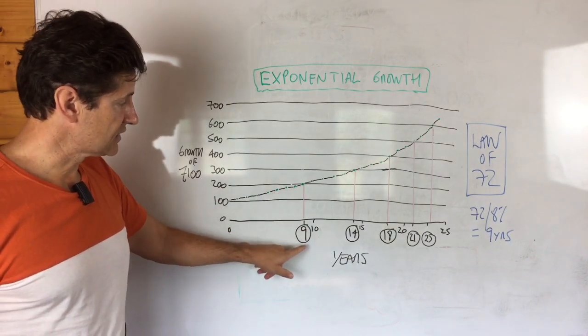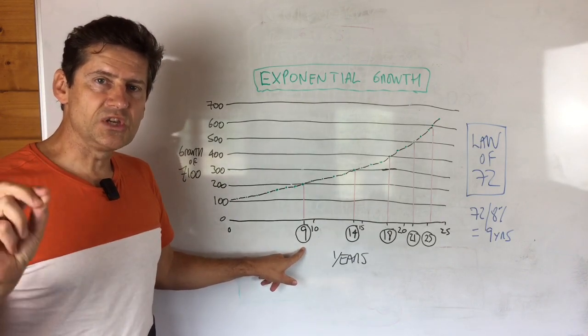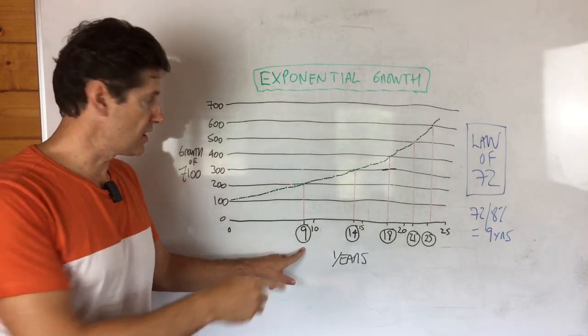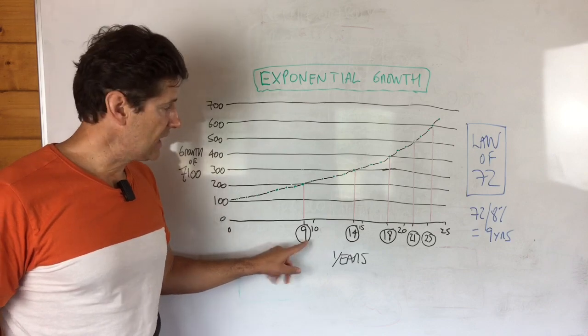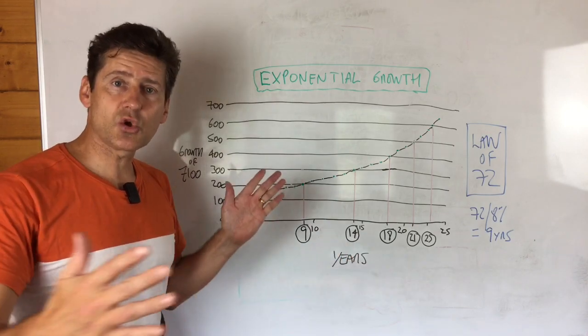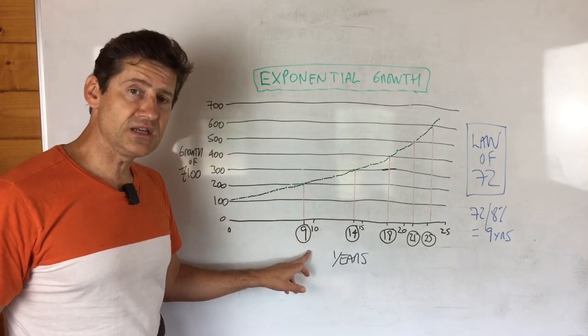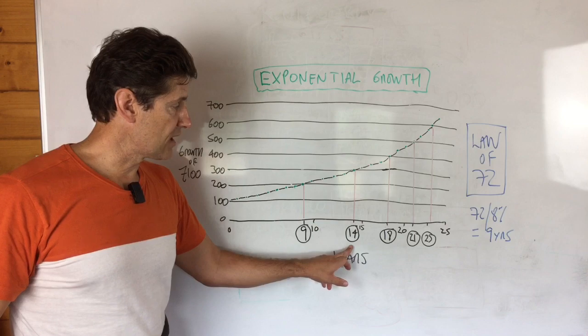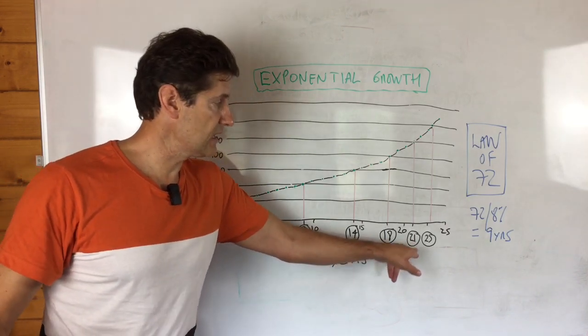Now the principle I want you to really grasp here is that for every subsequent hundred pounds of growth—bear in mind it took us nine years to grow from 100 to 200—it actually accelerates, it gets quicker. So the next hundred pounds of growth doesn't take nine years; it only takes five years. And the next hundred pounds of growth only takes four years, and the next hundred pounds only takes three years, then two years, and one year.